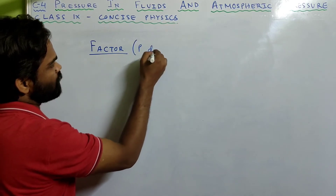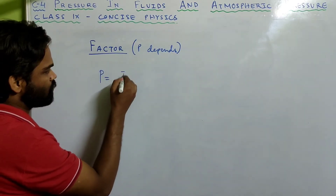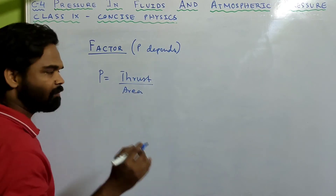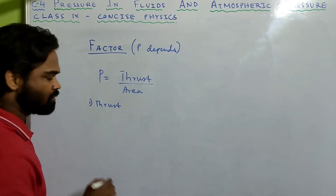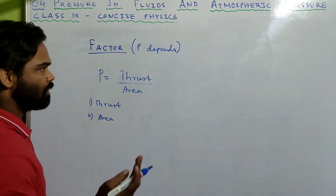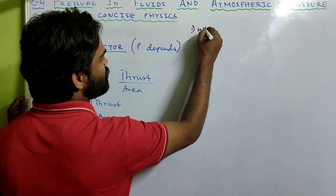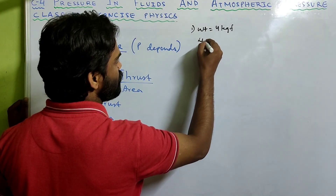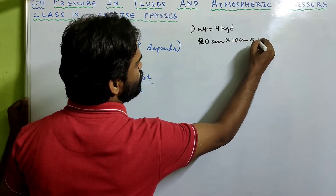Pressure depends on thrust acting on the surface and the area on which it is acting, since pressure equals thrust divided by area. Let's take an example: suppose we have a brick with a weight of 4 kgf and dimensions 20 cm × 10 cm × 5 cm — length, breadth, and height.